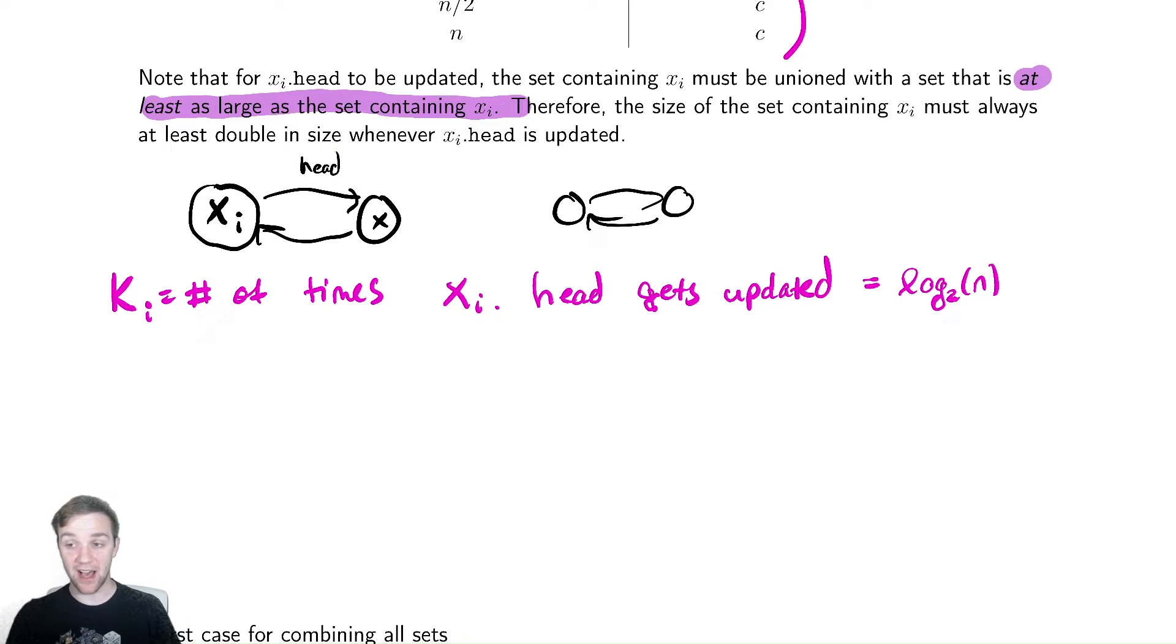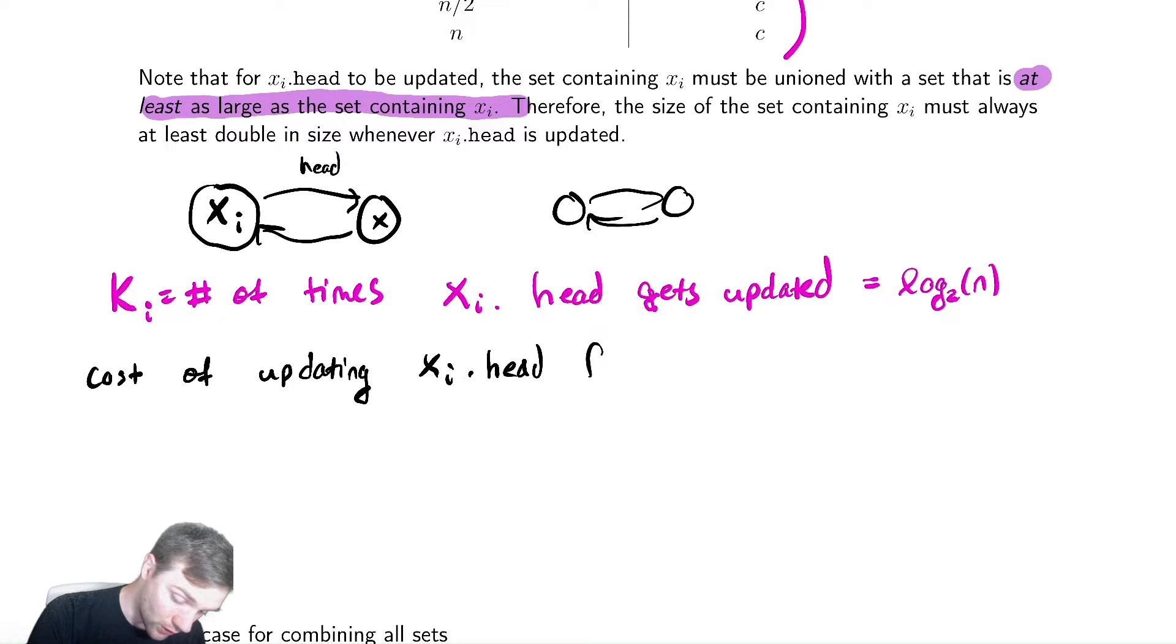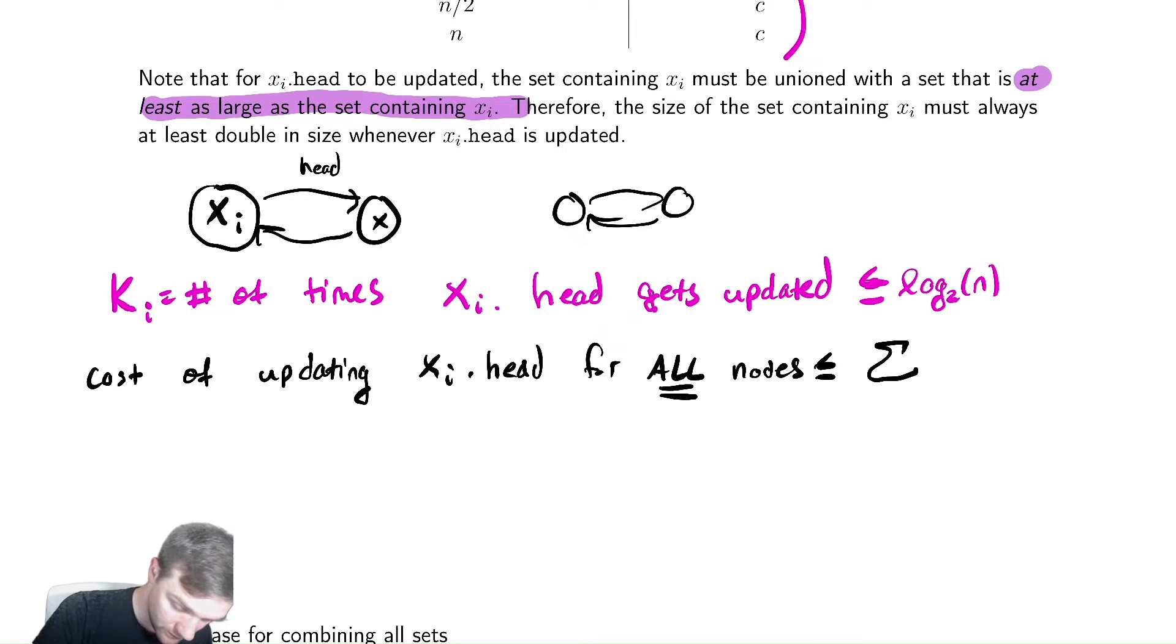If I'm looking at the cost of updating xi.head for all nodes, that would be less than or equal to, because this is actually less than or equal to log base two of n. If I add up the number of times it's updated times the constant cost it takes to update it, for every single vertex I have n different nodes, the cost of doing the updates is c, and the number of times is ki. This is less than or equal to the sum from i equals one to n of c log base two of n, and this is less than or equal to cn log base two of n.